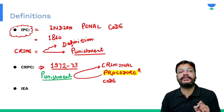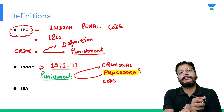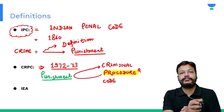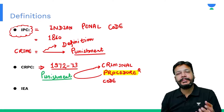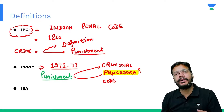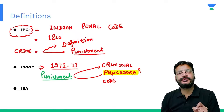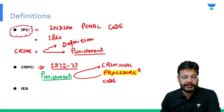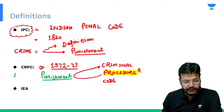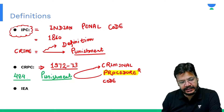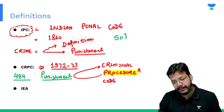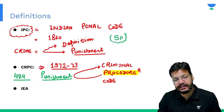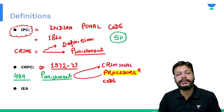The procedure word is very important. When you arrest someone, it's a procedure. When you investigate, it's a procedure. Bail, summon, warrant, judgment — everything is a part of CRPC. The total number of sections in CRPC are 484, and the total number of sections in IPC are 511.